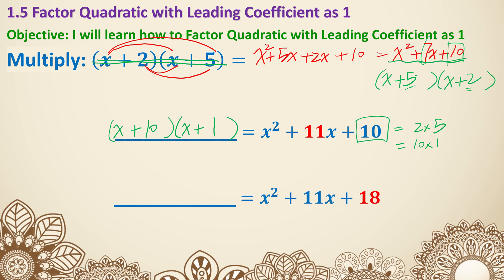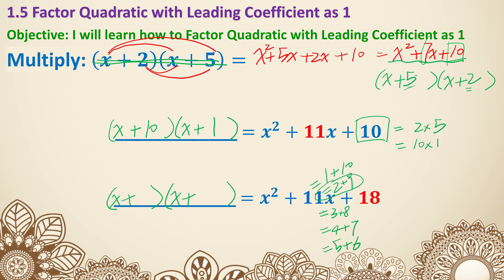Now let's change the number. What if I keep the middle number at 11, but change the back number to 18? This time, the two numbers need to add up to 11 but multiply to be 18. I'll try breaking down 11: 1 plus 10 does not work. But 2 plus 9 — wait, 2 times 9 is 18! Let me check the others: 3 plus 8 gives 3 times 8 equals 24, 4 plus 7 gives 28, 5 plus 6 gives 30. So the only option is 2 and 9. That's how we factor a quadratic when the leading coefficient is 1. We'll learn the more complicated ones in the next lesson, but this is the big idea for today.